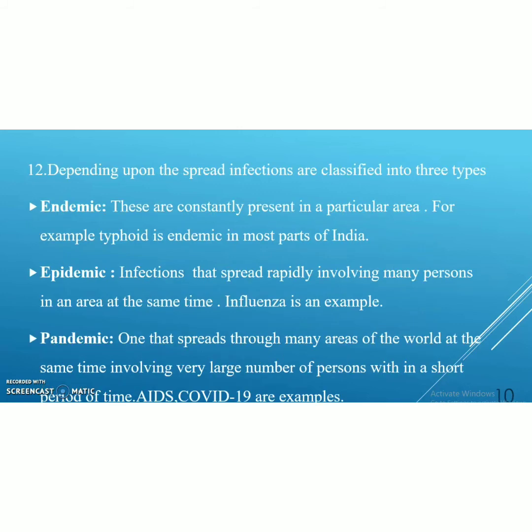Depending upon the spread of infections, they are classified into three types: endemic, epidemic, and pandemic. Endemic means these are constantly present and confined to a particular area — for example, typhoid is endemic in most parts of India. Epidemic is more serious: infections that spread rapidly involving many persons in an area at the same time. One example is influenza.